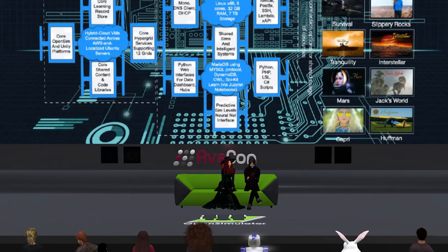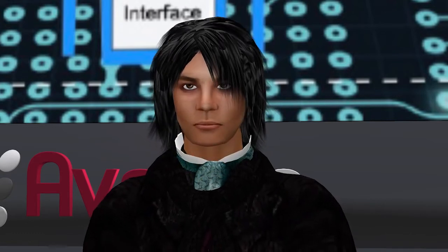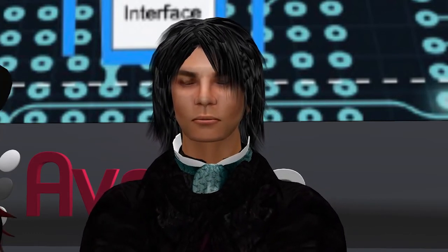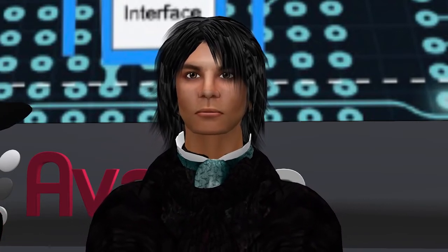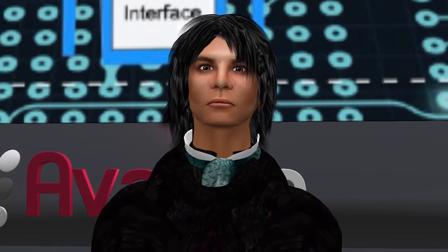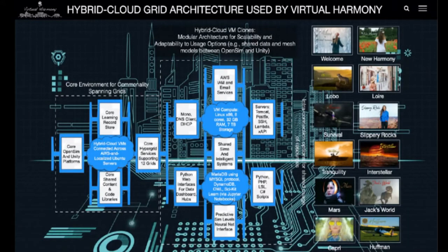We always seem to try to squeeze as much as we can into our slide real estate space. When you go towards the middle of the slide, you can see more details of the types of services that we offer in our virtual machine. All of our grids are operated as independent virtual machines with shared databases.